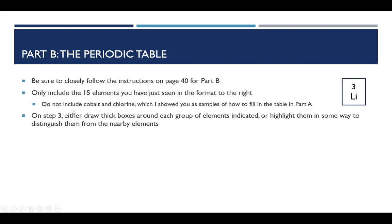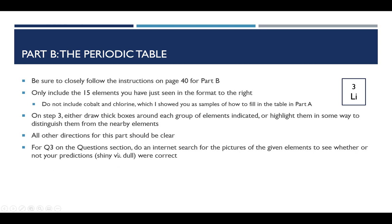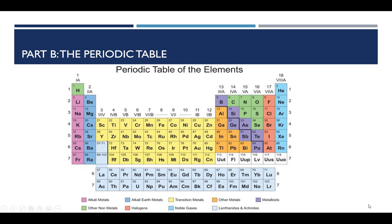On step three, where it asks you to outline various sets of elements, for example, the halogens or the alkali metals, you just want to draw a thick box around each of those groups of elements, preferably with a colored pencil so we could distinguish them. Or you could highlight them, or preferably any way of using color would be ideal. And then all the other directions for this part of the experiment should be very clear. For question three on the questions section, it asks you to make predictions on whether certain elements are shiny or not. And what you should do after making your predictions is go ahead and do an internet search to see whether your prediction of shiny versus dull is correct.